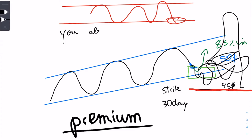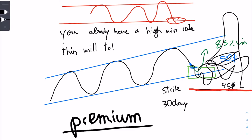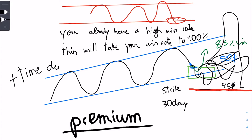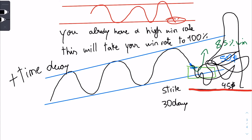Now you might ask: this sounds like a near 100% win rate strategy — it should be really profitable. But there is a downside: the premiums will not be high. Yes, it has a really high win rate, but what I care about is consistency. With this strategy you're going to be very consistent and always able to generate income, but that income won't be as high as you expect, because the more out of the money you go, the lower the premium will be.